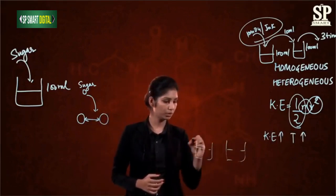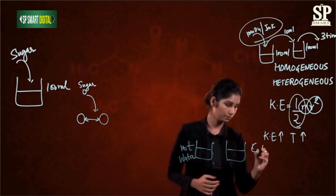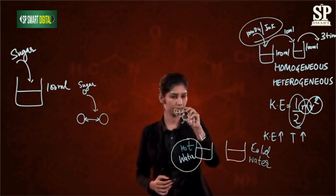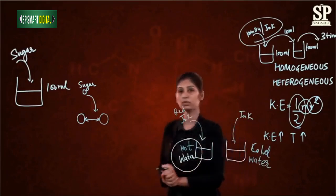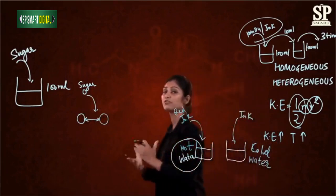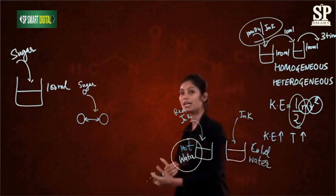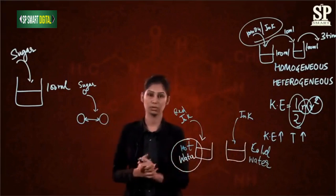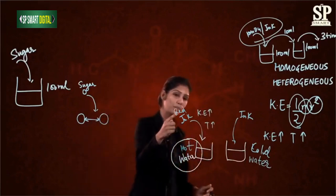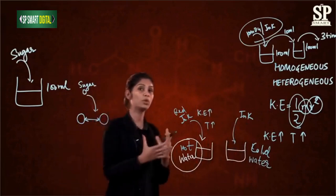Let's take two beakers — one with hot water and one with cold water — and add ink of red or blue color. We will notice that the diffusion of red ink in the hot water is faster than in the cold water. This means the particles of ink in hot water are moving with higher speed and so they have higher kinetic energy. This proves that kinetic energy is higher when the temperature is higher. The intermixing of particles of ink in the water particles is called diffusion, and diffusion also increases with the increase of temperature.